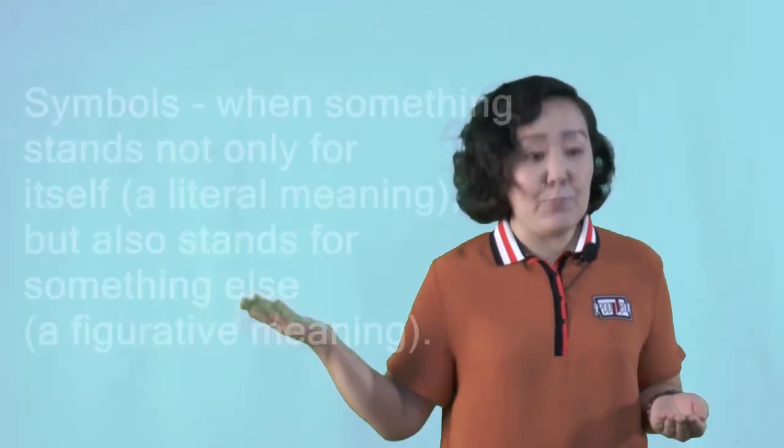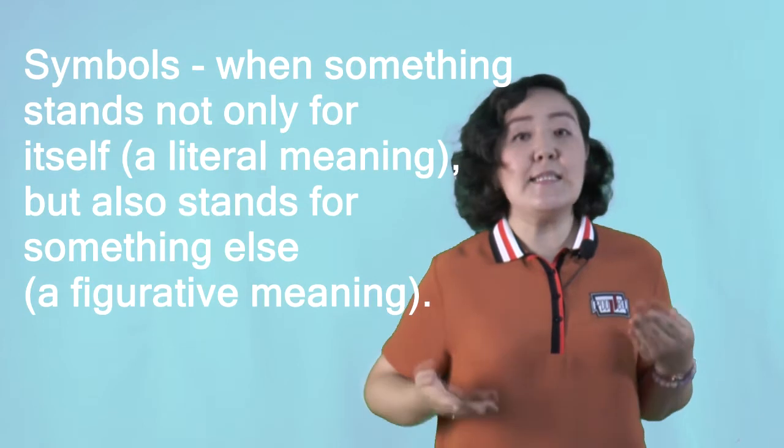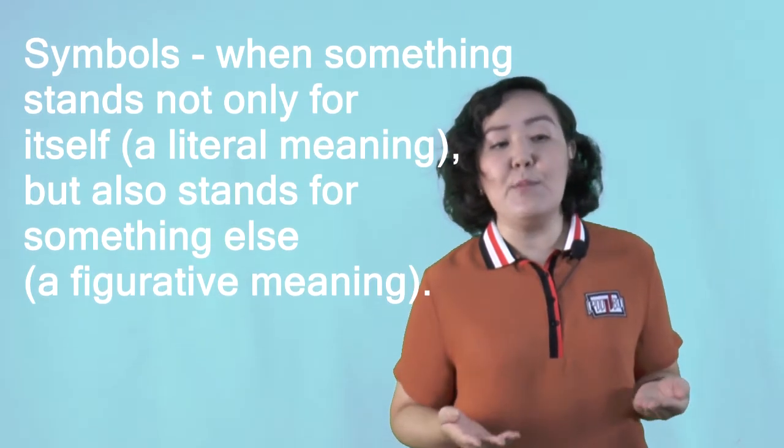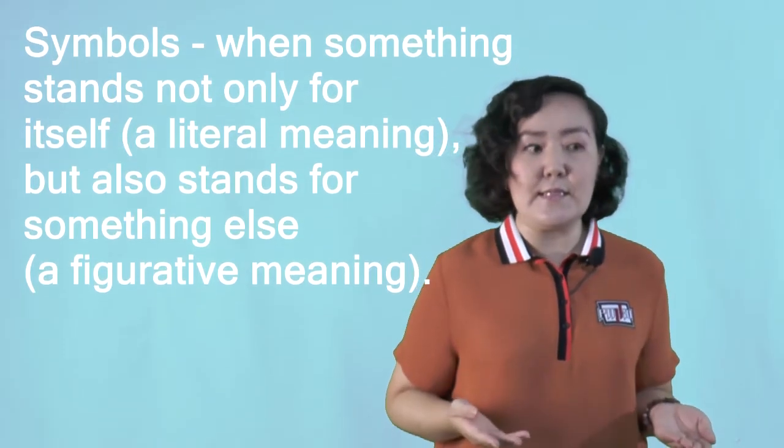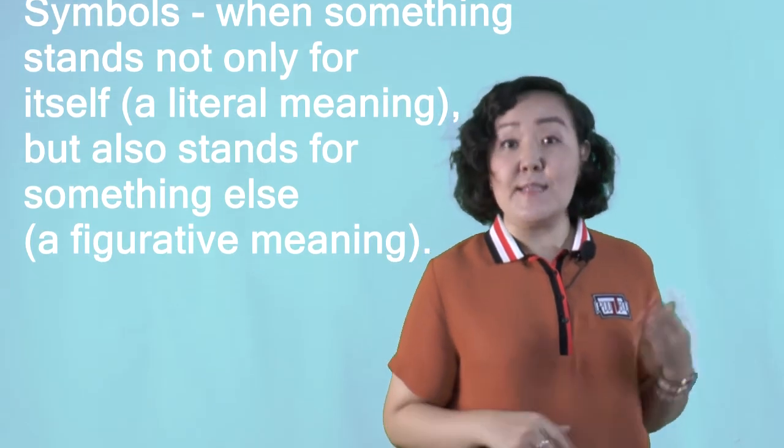Imagery. Usually, imagery in films are the elements used to create pictures in our minds. They may include some symbols when something stands not only for itself but also stands for something else. What images are used in the film? For example, color? Objects? Can you find any symbols in the film?